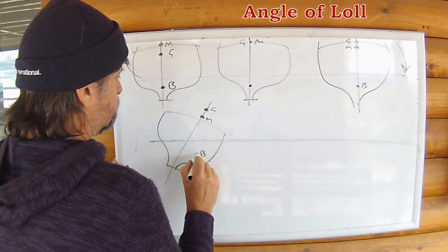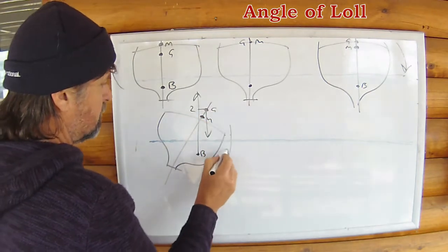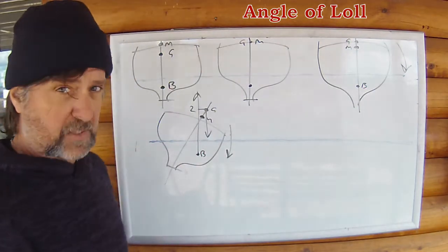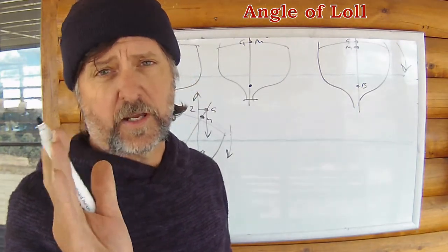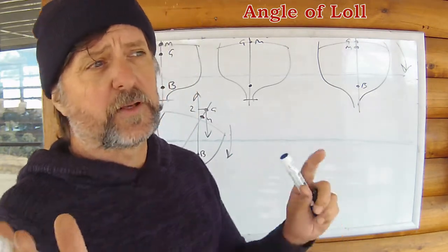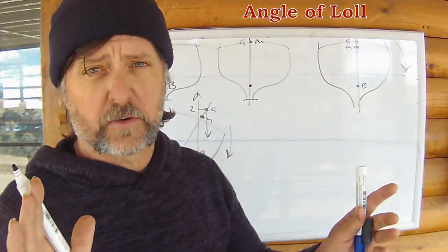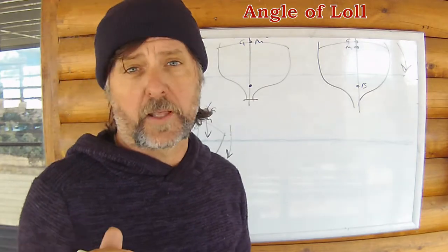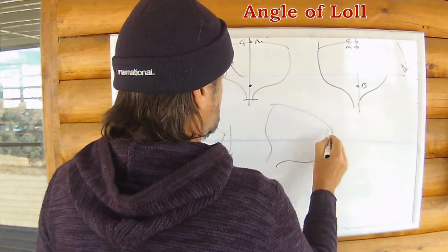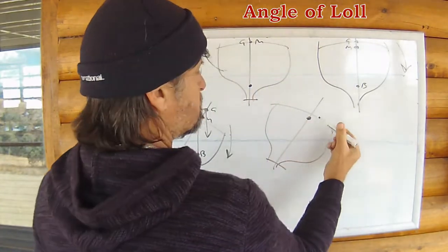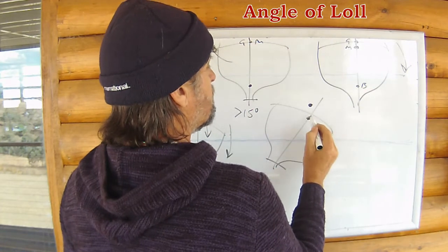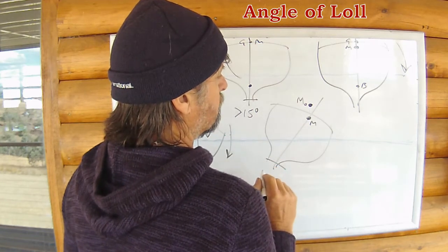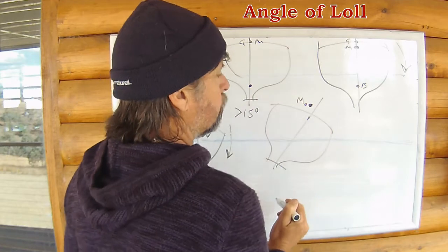Here is the metacenter and here is G. There is B acting up, G acting down. Negative GZ. The vessel is continuing and is now capsizing. But the metacenter only stays put on its centerline at small angles of inclination of heel. So about seven degrees or under the metacenter doesn't move. But over that, and when the beam of the vessel starts to increase or decrease, the metacenter starts to wander around a bit and stability becomes more complex.